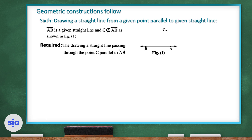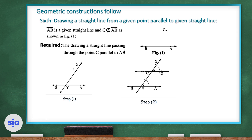For example, line AB is given and point C does not belong to AB. The question wants us to draw a straight line passing through point C and parallel to AB. First step: draw a line from C passing through line AB. Second step: put the pin of the compass at point Y and make an arc, then put the pin at point C and make another arc.